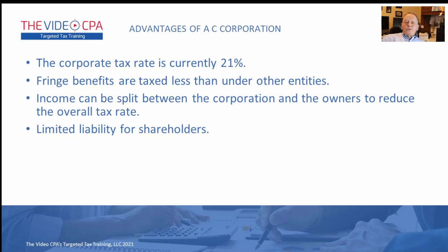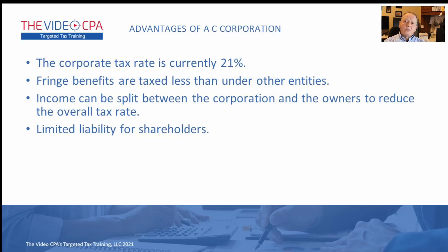The corporate tax rate right now is 21%, established in 2017. One advantage of a C corporation is that fringe benefits are taxed less — insurance and other fringe benefits are taxed less than they would be under an S corporation, partnership, or proprietorship. You can also provide more benefits through a C corporation. Another advantage is that you can split the income between the corporation and the owners, especially with a fairly small C corporation.